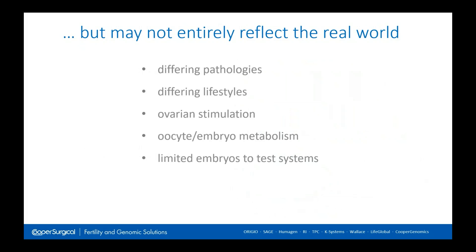The other key factor is that these systems may not reflect the real world — the type of patients that we typically treat — because they will have different pathologies, different lifestyles, and the ovarian stimulation they receive might impact on results. Individual oocytes and embryos may have slightly different metabolism and there'll be limited embryos to test, so we're relying on a best interpretation of the scientific literature.